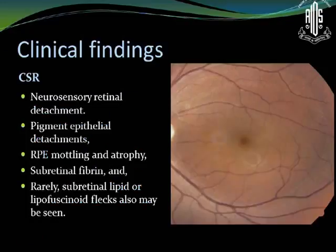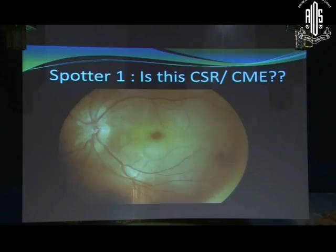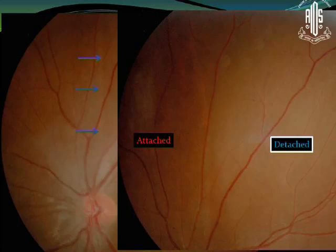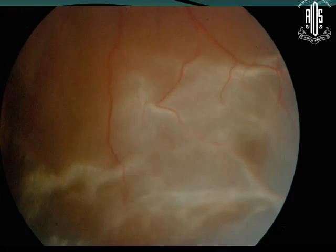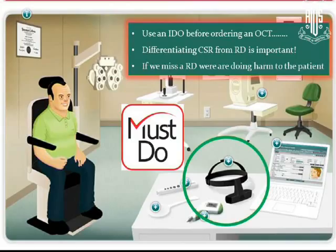CSR usually causes micropsia, a positive scotoma, and patients have a small hyperopic refractive error. Clinically, it is a neurosensory detachment; you can have PEDs and rarely subretinal fibrin. CME diagnosis is straightforward — a blunted foveal reflex with intraretinal cysts in the perifoveal region. For spotter number one, on indirect ophthalmoscopy this patient had a shallow detachment in the superior quadrant with a break at 6 o'clock — the corrugated appearance is a clue. So it is more important to do a good indirect ophthalmoscopy before ordering an OCT, because if you miss a retinal detachment, you are doing harm to the patient.